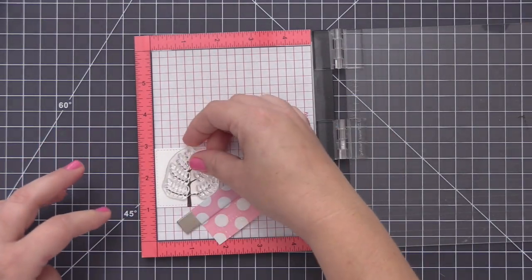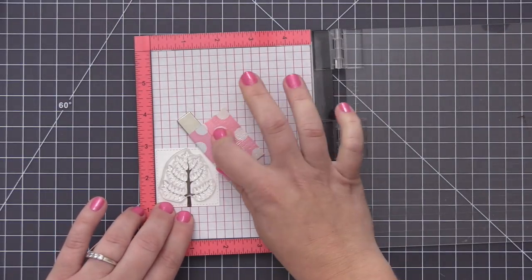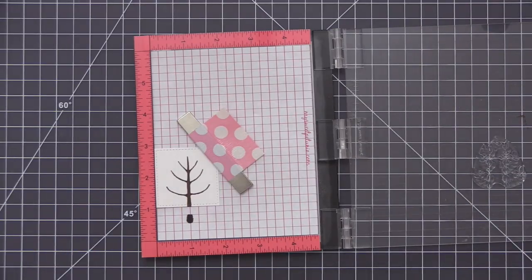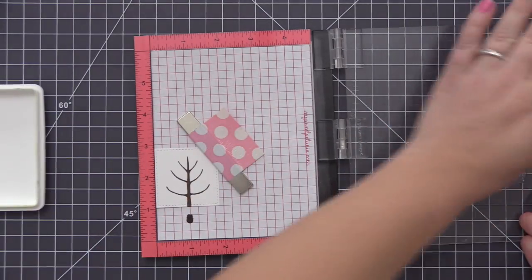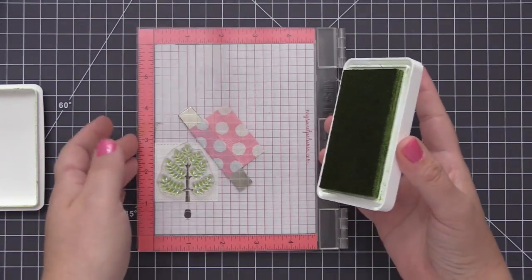Now that I have all the tree trunks stamped I'm going to do all of the top of the trees and for these we're going to change out the colors and the way that we're stamping them just to represent the different seasons. The first thing I'm going to do is take some sour apple dye ink and stamp out my first tree and this is going to be our spring tree.